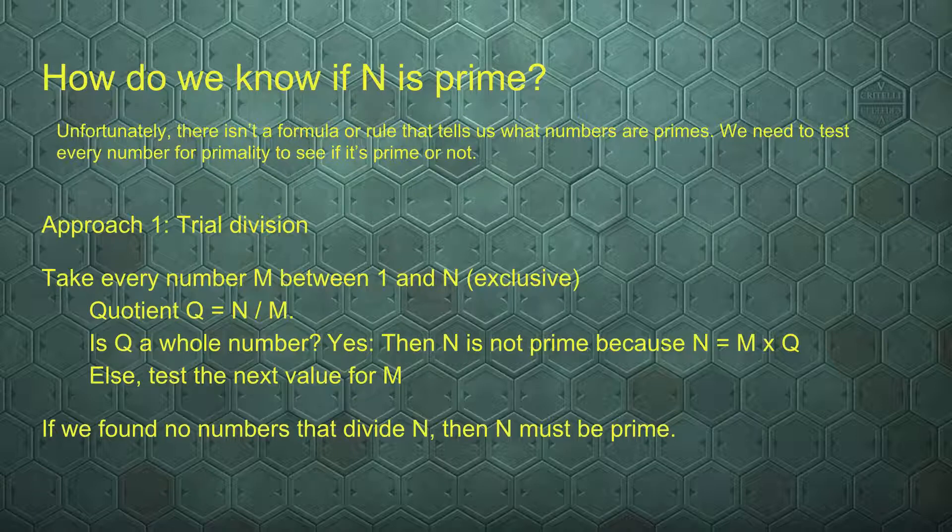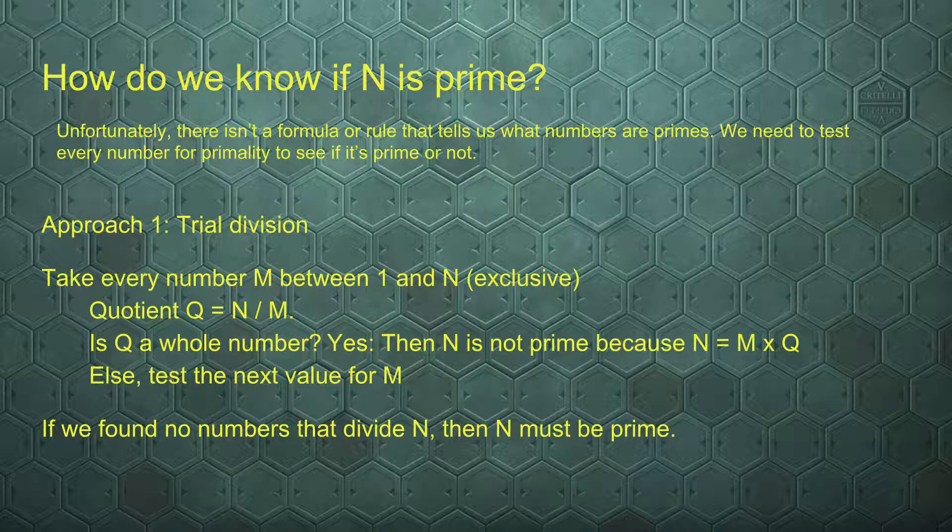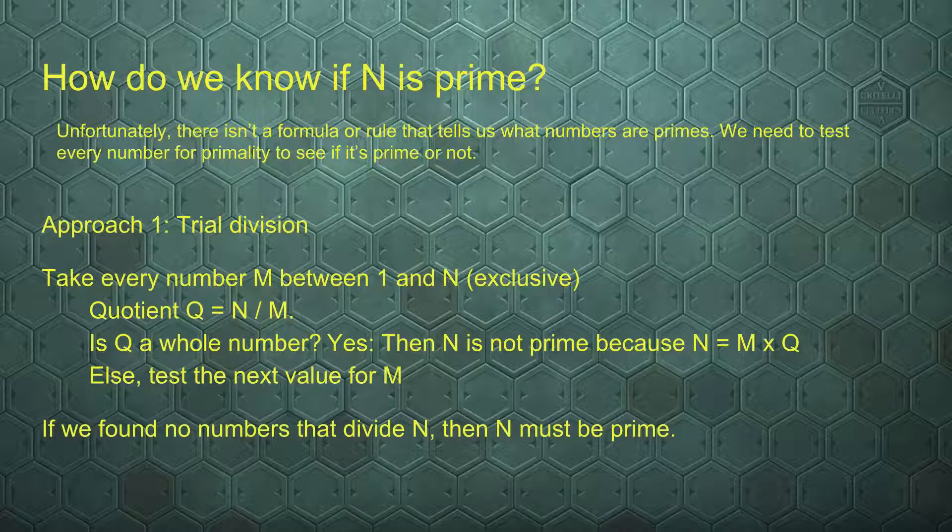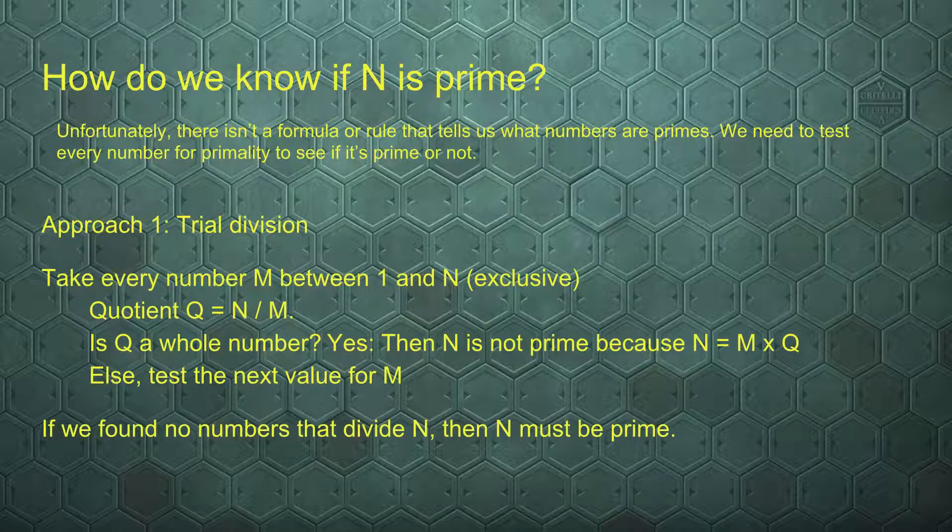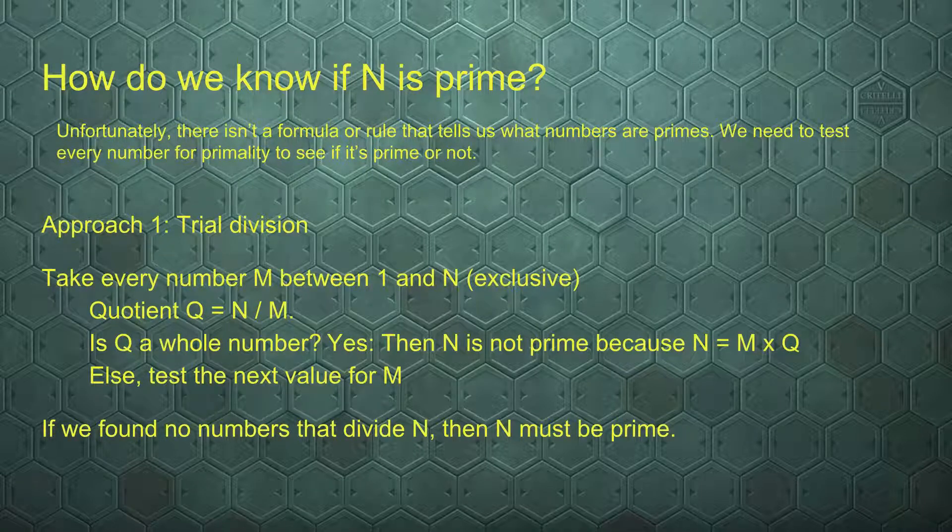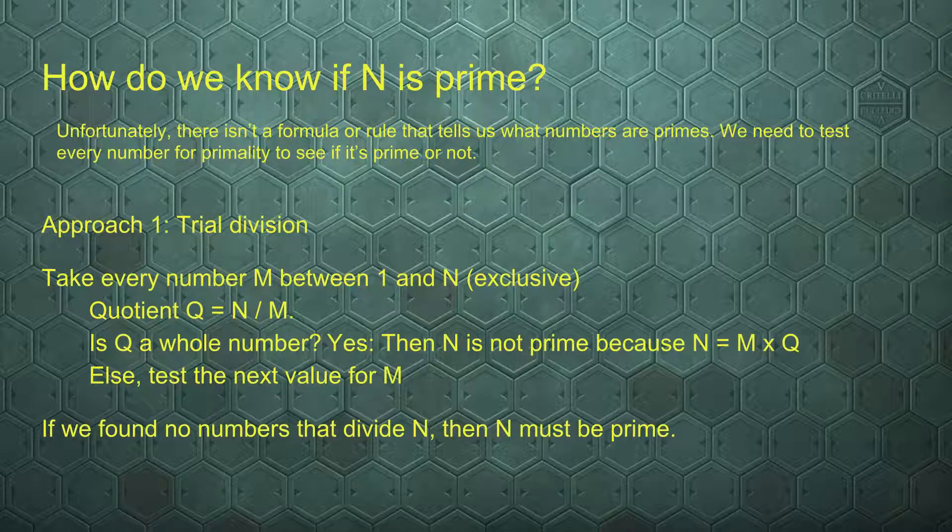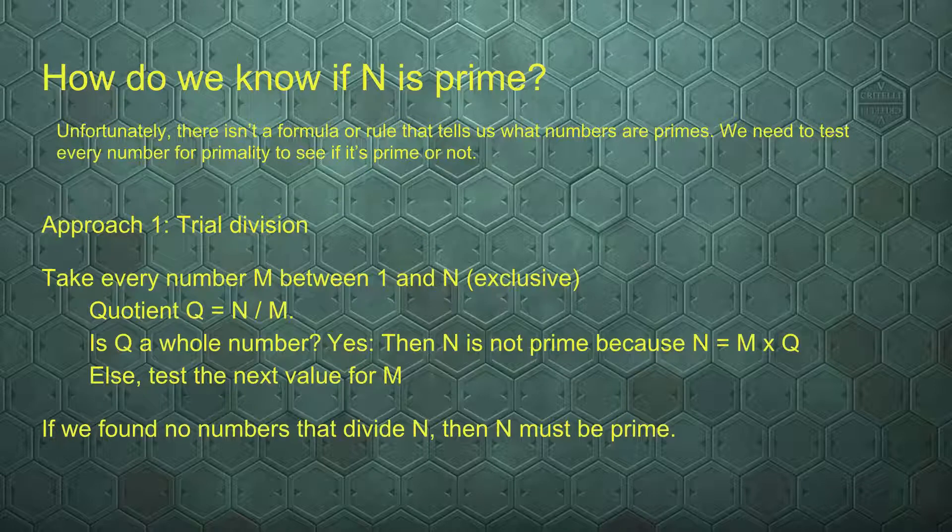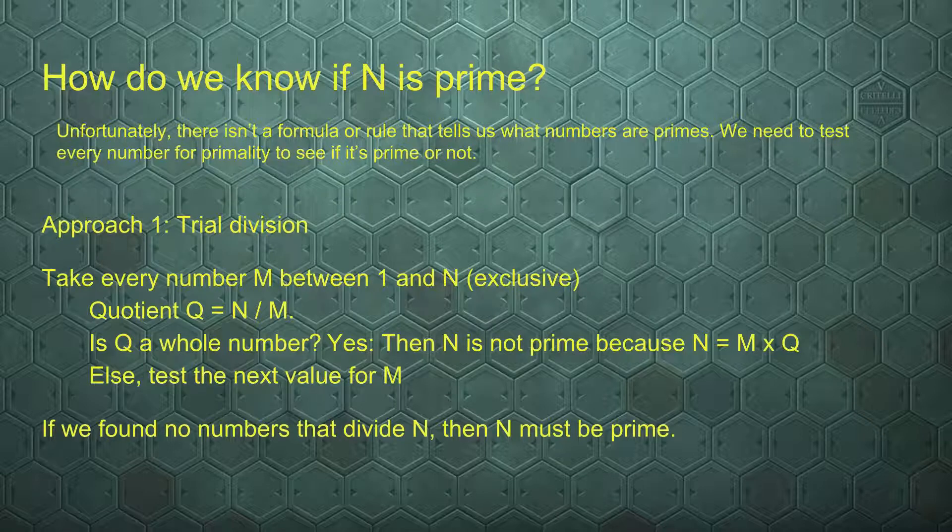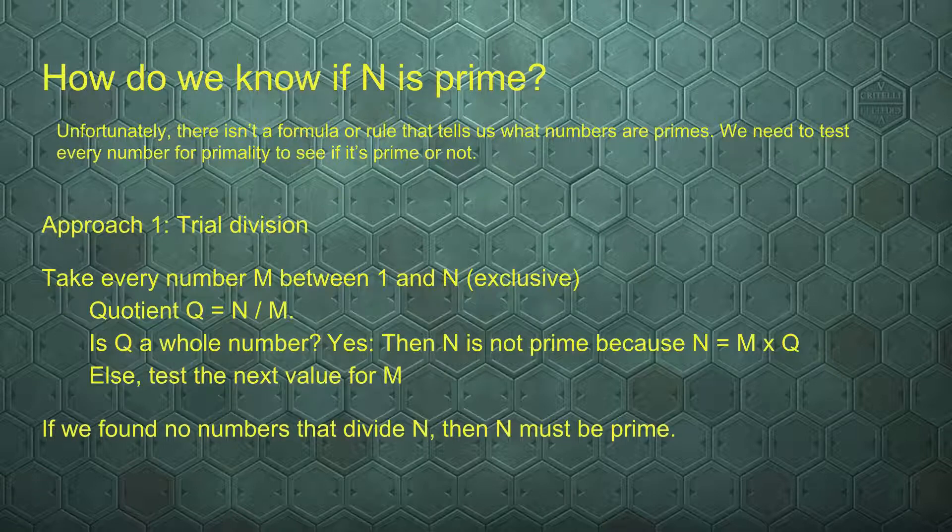One very naive approach might be trial division, where we take all the numbers between 1 and n exclusive, so that means 2 up to n minus 1. We take that list, take the smallest number m, and see if we get a quotient q when we divide n by m. If q is a whole number, then n is not prime because we found a whole number that divides it. If we didn't, we take the next m and run through that list. If we did not find any numbers that cleanly divide n, then n must be a prime.